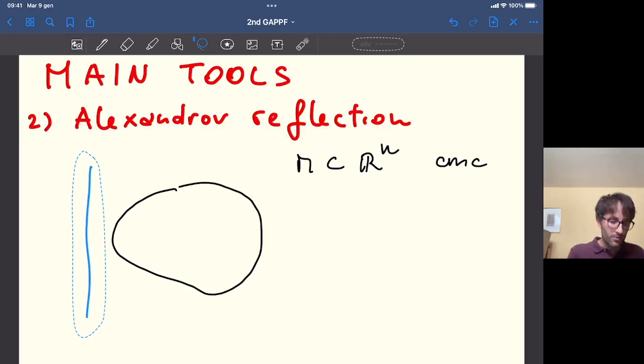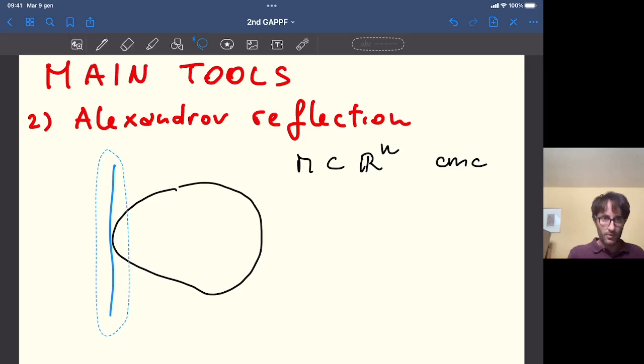Then we can move this hyperplane parallelly, approaching M. At some point there will be a first touching point, so in particular the two are tangent to each other, and then we can enter a little bit.